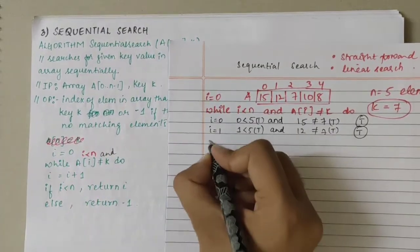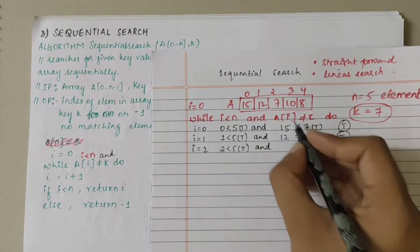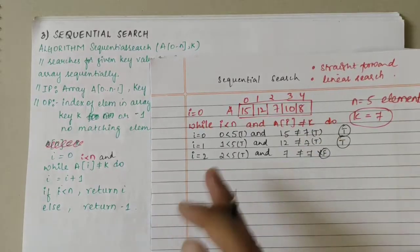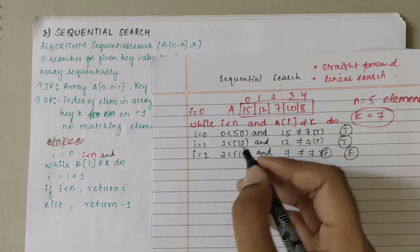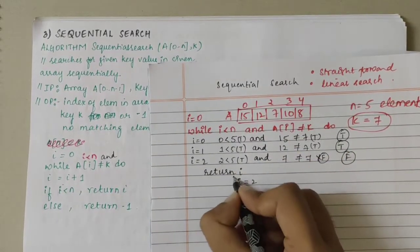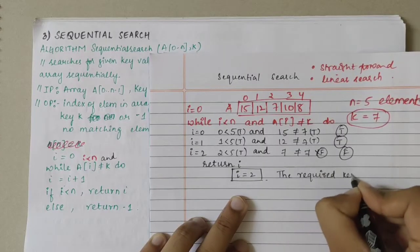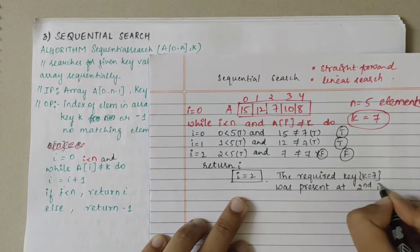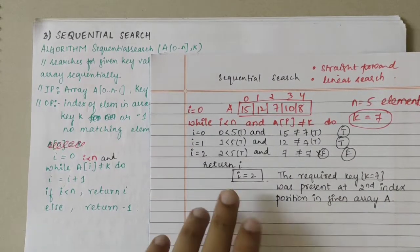Both are true, so we jump to i equal to i plus 1, giving i equal to 2. Next, i is 2; 2 is less than 5 — true. And A[2] is 7. Is 7 not equal to 7? No, this is false. One true, one false — it becomes false overall. When I get false, I return the i value. The i value is 2. This says that the required key k equal to 7 was present at index position 2 in the given array A.